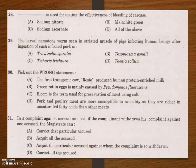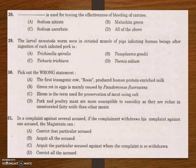Pork and poultry meat are more susceptible to rancidity as they are rich in unsaturated fatty acids compared to other meats. Unsaturated fats are more susceptible to oxidation than saturated fats because they have more unstable bonds, allowing oxygen to react at those unstable points, causing them to become rancid faster.